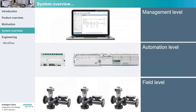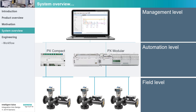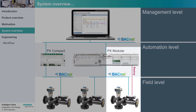Let's take a look at the integration of the intelligent valves. The intelligent valves are connected to and controlled by a higher-level automation station — in this case, either a PX Compact or a PX Modular. To display the data in DeZego CC, integrate the PX Primary Automation Station into DeZego CC. All the communication is based on BACnet IP. Alternatively, intelligent valves can be controlled via an analog signal.